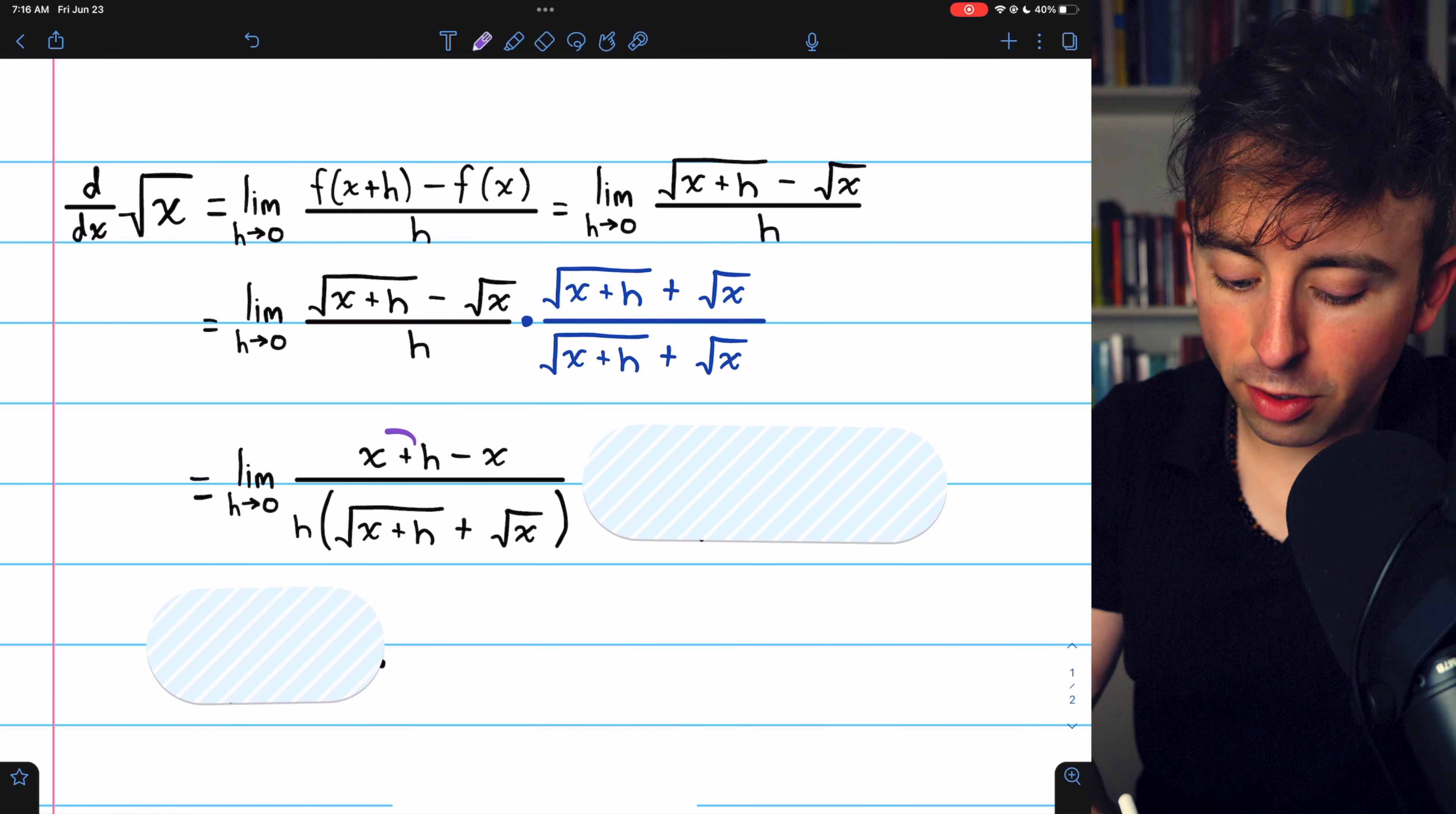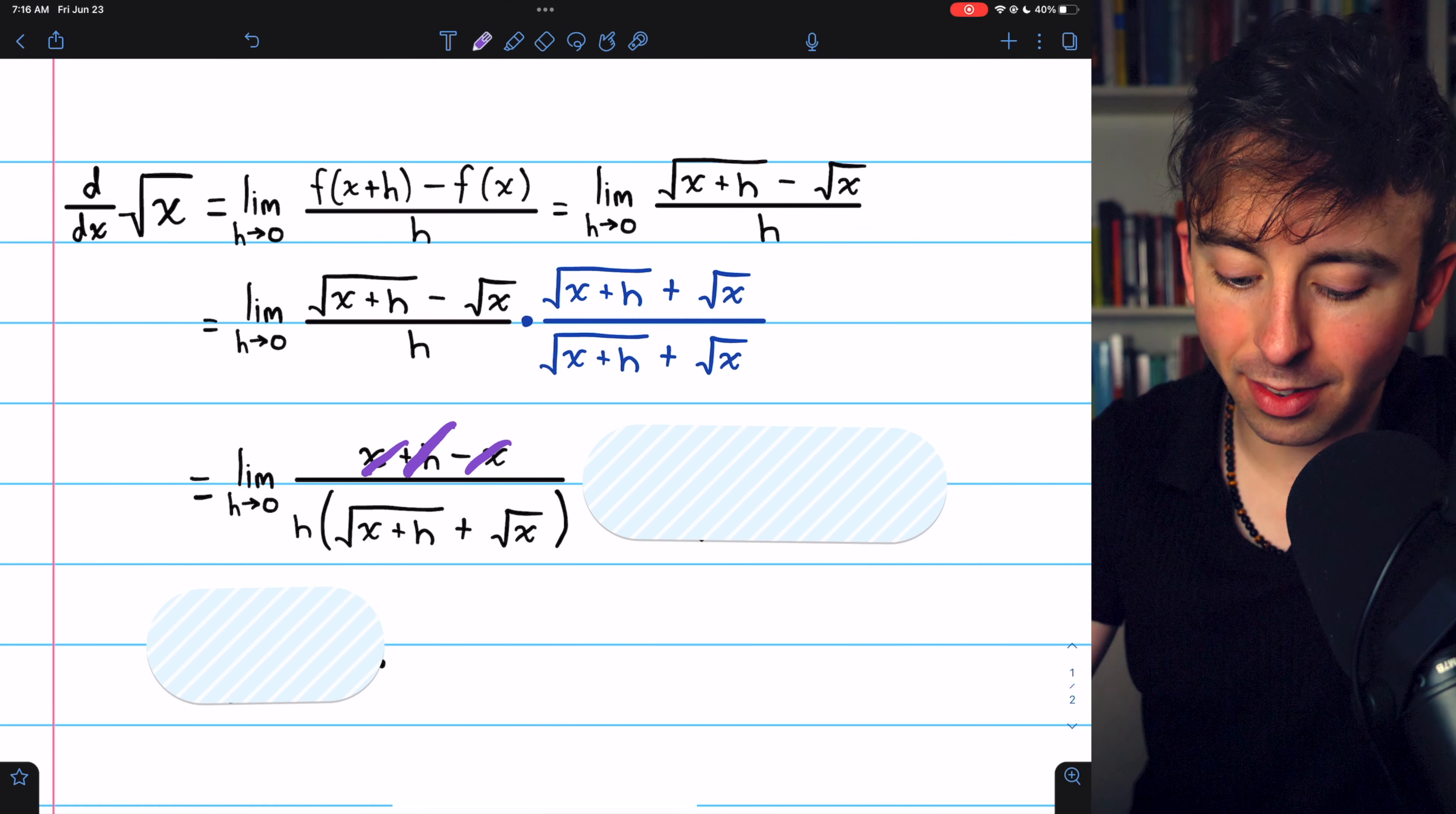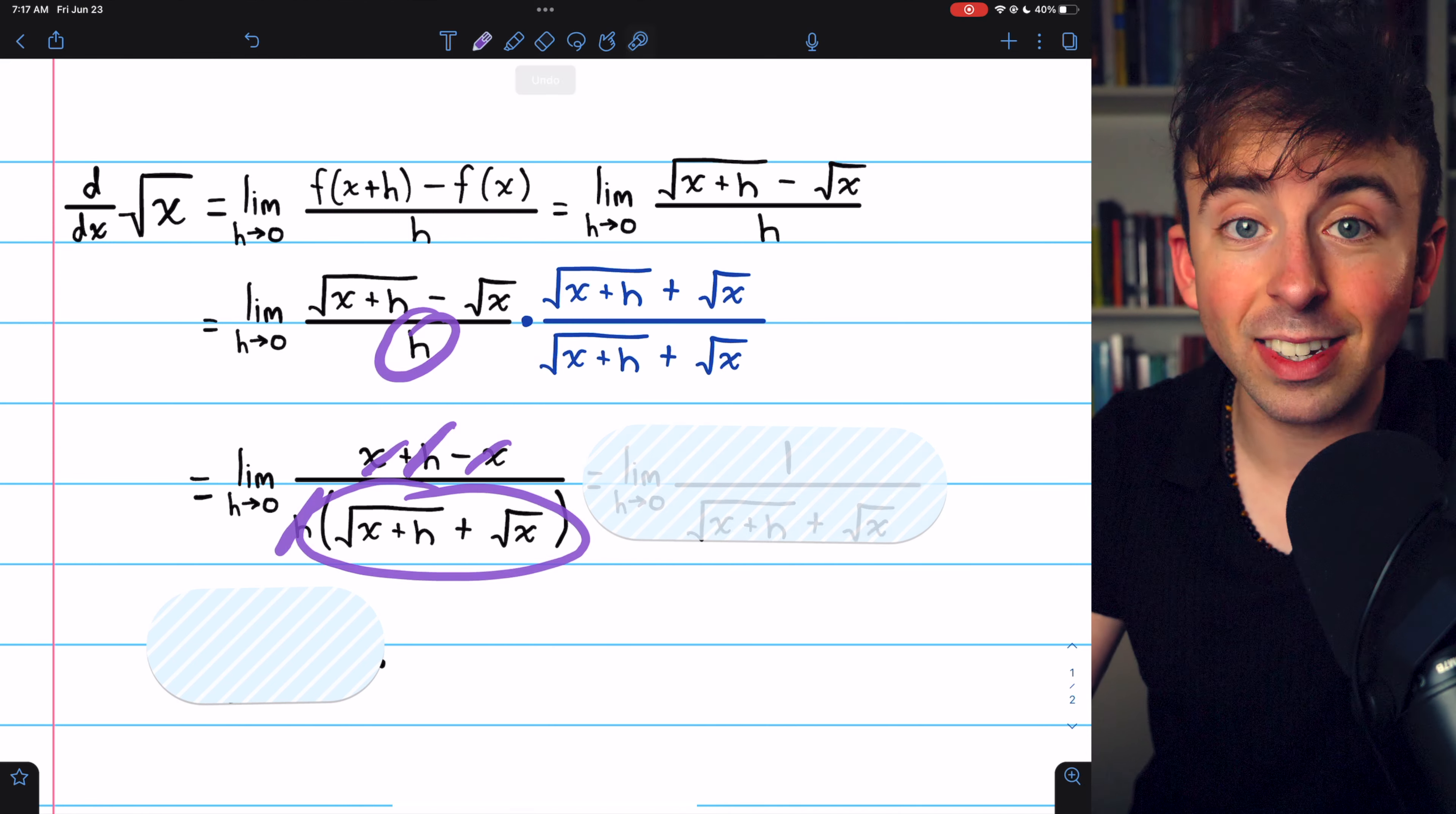Now that the numerator is just x plus h minus x, the x's cancel out, which just leaves an h in the numerator. The h then cancels out with the h in the denominator. So all that's left in the denominator is the root x plus h plus root x that we multiplied by in the previous step.